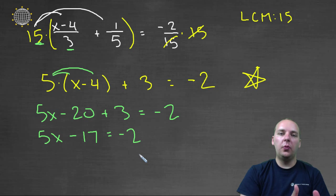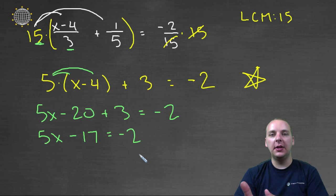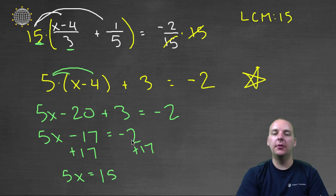We can keep the variables on one side and move the constants to the other. That's one of our steps that we have to do. So we can add seventeen to both sides. We'll get five x equals fifteen, and that's negative two plus seventeen.